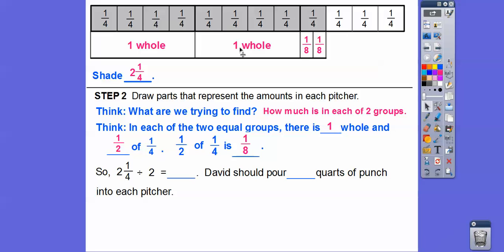So this one gets a whole quart plus this eighth of a quart right there. So two and a quarter divided by two is one and one eighth. So David should pour one and one eighth quarts of punch into each pitcher. Yummy, I love punch.